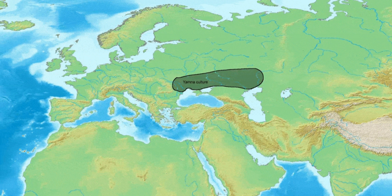The word gens is feminine, and the name of a gens was also feminine. Marcus Valerius Corvus was a member of gens Valeria. Valerius was his nomen. His son's nomen would have been Valerius, and his daughter's Valeria.